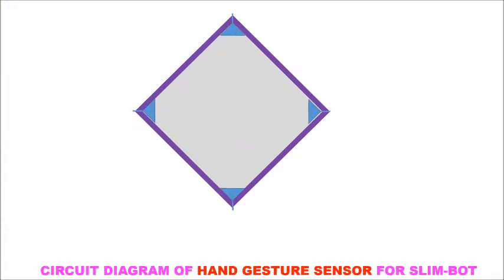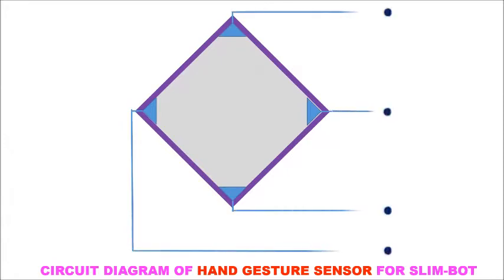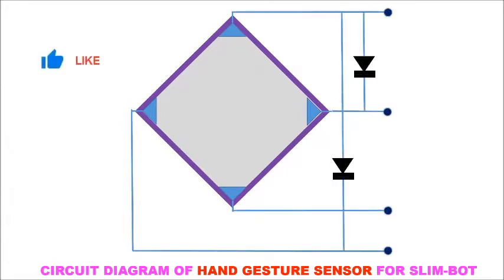Here we require a sensor for gesture control. A thin square shaped copper or aluminum plate is used as base. Four conductors are used at each corner above the base.